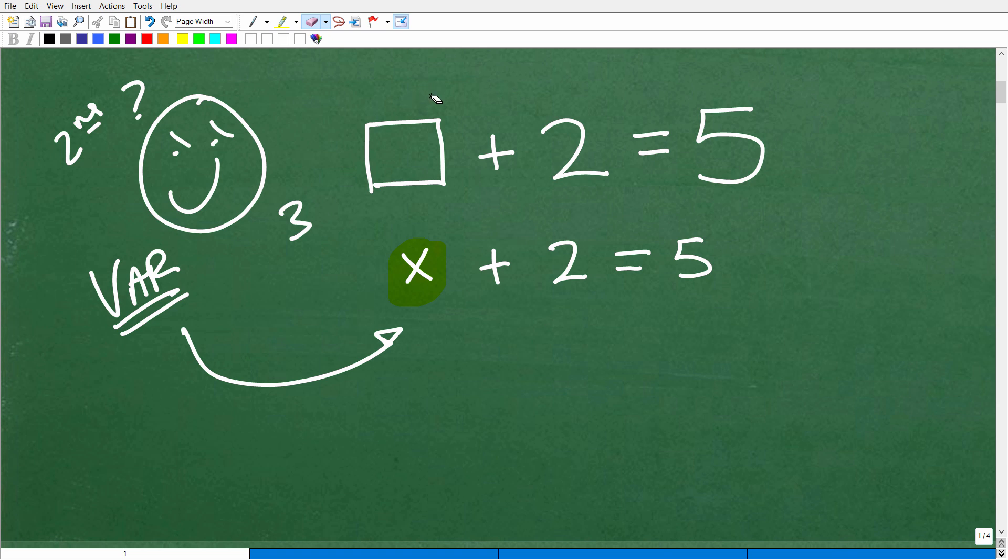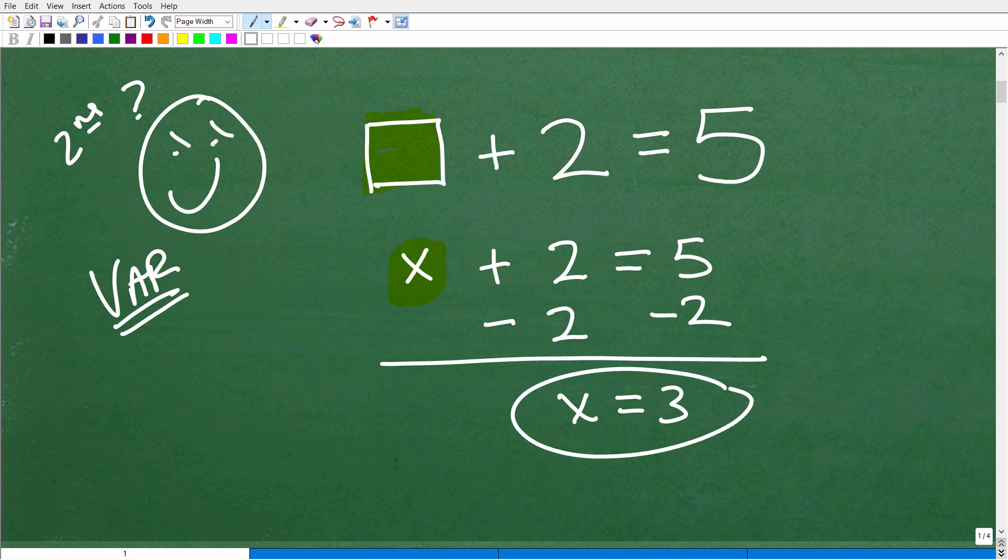So this is an example of a variable that is not a letter. But in algebra, we do use letters pretty much all the time, right? So here, x plus 2 is equal to 5. So we're going to solve this equation. We're going to subtract 2 from both sides of the equation, we get x is equal to 5 minus 2, which, of course, is 3.